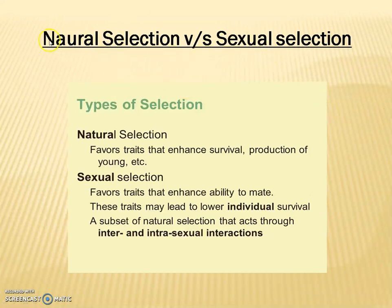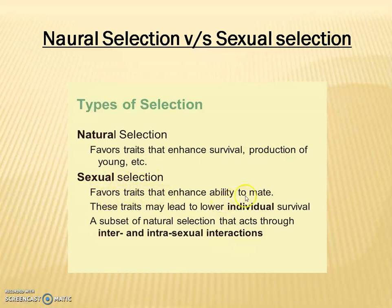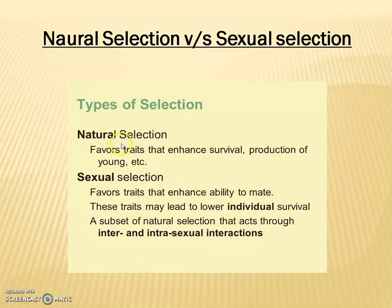This is the comparative view of two types of selection: natural selection and sexual selection. Natural selection favors traits that enhance survival — main focus is on survival and production of young. Sexual selection favors traits that enhance the ability to mate; these traits may lead to lower individual survival. Sexual selection is a subset of natural selection that acts through inter- and intrasexual interactions. Natural selection operates on both sexes, but sexual selection operates on one sex and is always related to reproduction, while natural selection is related to survival.